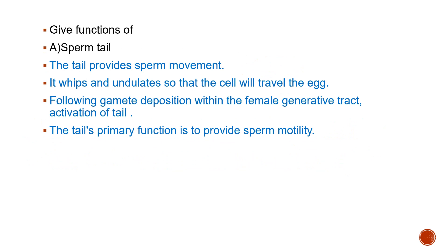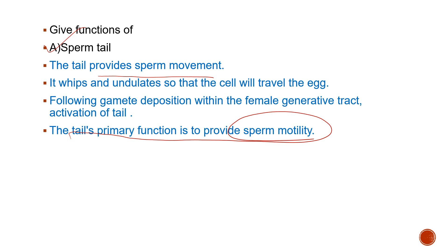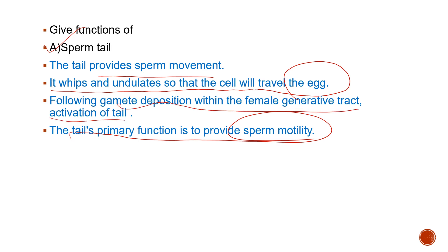Now for the functions of the following — first is the sperm tail. The tail provides sperm movement; its primary function is sperm motility. It whips and undulates so that the cell travels towards the egg. Following gamete deposition within the female reproductive tract, the activation of the tail is also one main function of the sperm tail.